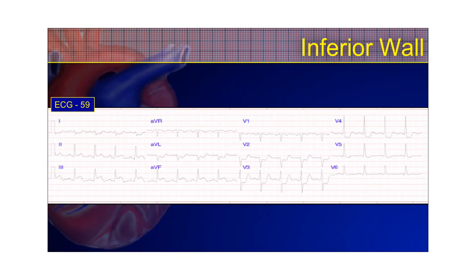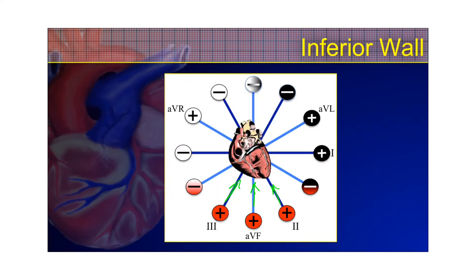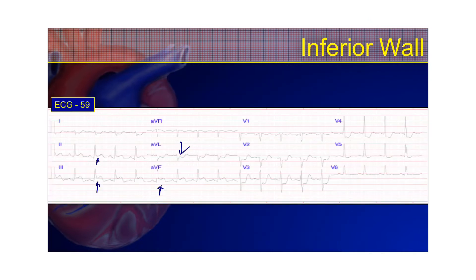Here's a typical inferior wall MI pattern. You'll see ST segment elevation — it doesn't look too impressive, but you can see it in leads 2, 3, and AVF. The second you see ST elevation in 2, 3, and AVF, look immediately at AVL. Lead 3 and AVL have their positive electrodes in nearly opposite positions, so they will show reciprocal changes for each other. If AVL has a reciprocal change, that is a STEMI — you don't need to go any further.